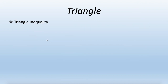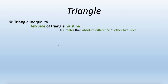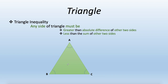The next important property is the triangle inequality. Given the lengths of two sides, we can find the range of the third side. Any side of a triangle must be greater than the absolute difference of the other two sides and less than the sum of the other two sides. For triangle ABC, side AB must satisfy: |BC − AC| < AB < BC + AC, and similarly for the other sides.